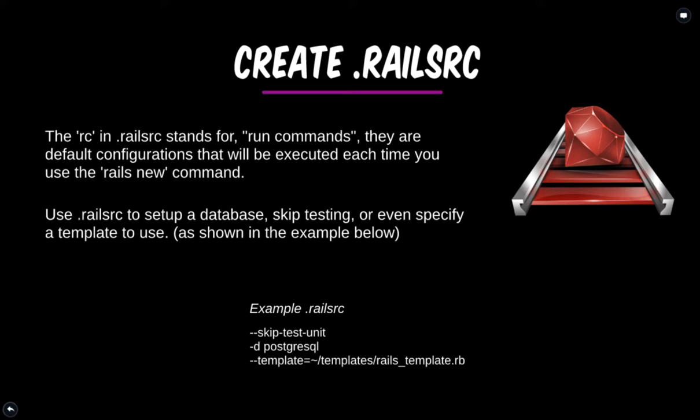So if you want to skip testing, you might use the option --skip-test-unit. And if you're constantly using RSpec for testing, you're probably running --skip-test-unit very often. Or if you're often using Postgres as your database, you're probably specifying -d postgresql each time you create a new Rails application. You can set these default settings up in the RC file. In this example RC file, we have skip-test-unit and -d postgresql and then --template pointing to a Rails template .rb file location.